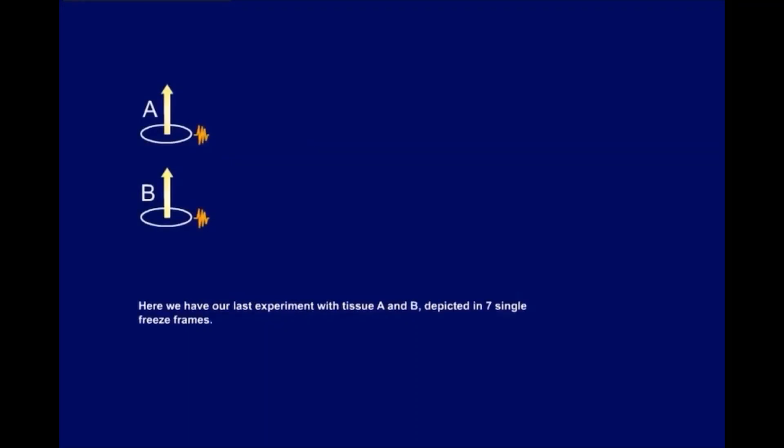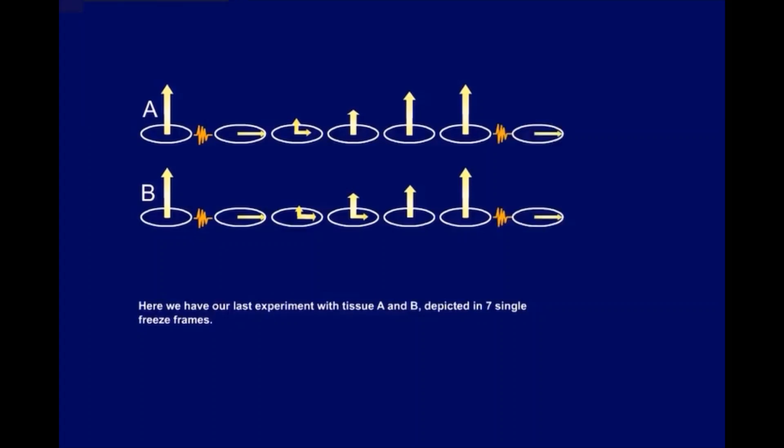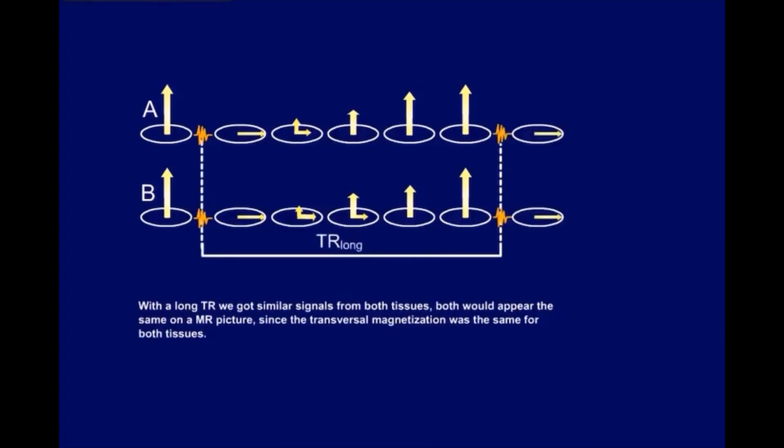Here we have our last experiment with tissue A and B, depicted in seven single freeze frames. With a long TR, we got similar signals from both tissues. Both would appear the same on an MR picture, since the transversal magnetization was the same for both tissues.